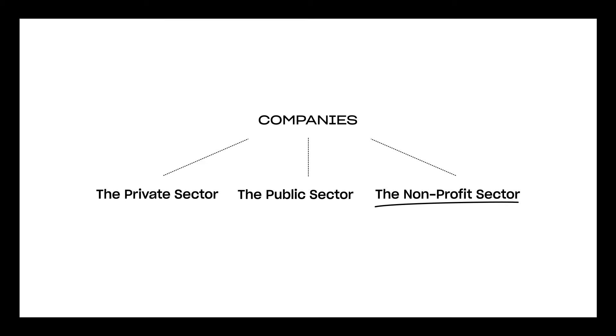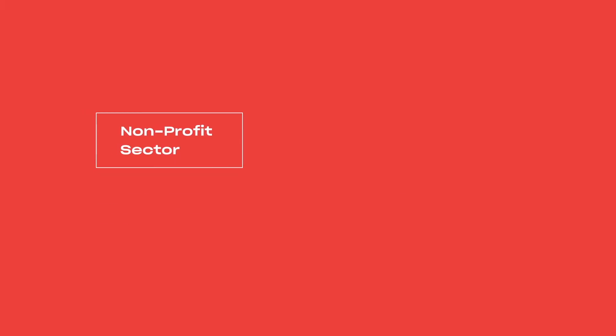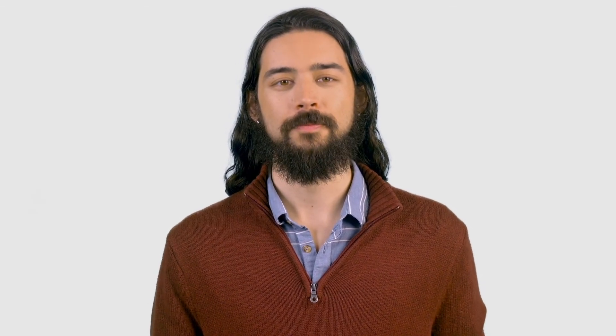The smallest sector is the nonprofit or civic sector. Nonprofits are special organizations that are exempt from income tax requirements, so any money they receive is not taxed. However, employees of nonprofits are not exempt from income tax. In return for their tax-exempt status, these organizations are subject to more legal oversight. Also, nonprofits are generally focused on social good, so they have to continually prove they are providing a benefit to society to build public confidence and secure funding. Some examples of nonprofits are environmental organizations, after-school programs, think tanks, and even churches.